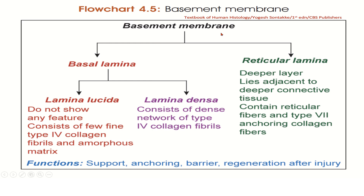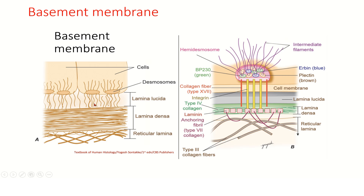The basement membrane has two parts: basal lamina and reticular lamina. The basal lamina has two sublayers — lamina lucida, which shows no distinctive features and consists of fine type IV collagen fibrils and amorphous matrix; and lamina densa, which consists of a dense network of type IV collagen fibers. The reticular lamina is the deeper layer, lying adjacent to deeper connective tissue and containing reticular fibers and type VII collagen fibers. Functions of the basement membrane: support, anchoring, barrier, and regeneration after injury. You can see the lamina lucida, lamina densa, and reticular lamina — the first two together are called the basal lamina.